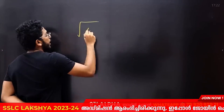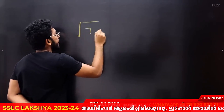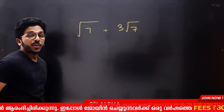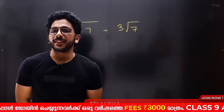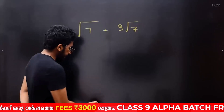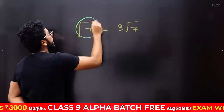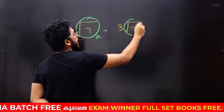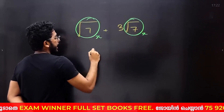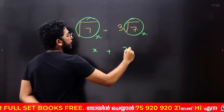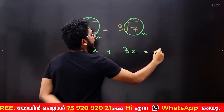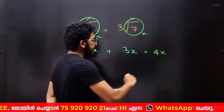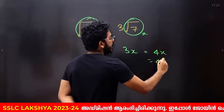Root 7 plus 3 root 7. Think of it this way: in my hand there is one apple — that is one root 7 — and here there are 3 apples — that is 3 root 7. One apple plus three apples gives four apples. So the answer is 4 root 7.